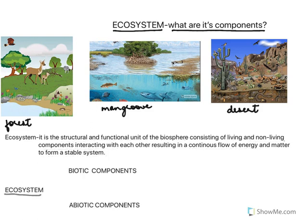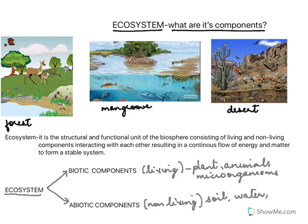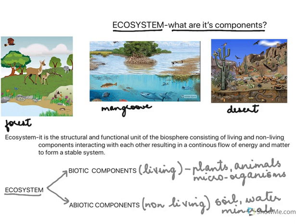To find the components of the ecosystem: the ecosystem is made up of two components. The biotic components are the living components — plants, animals, and microorganisms. Then we have the abiotic components, which are the non-living components such as soil, water, minerals, and so on present in that area.